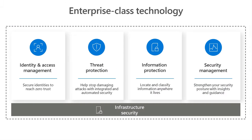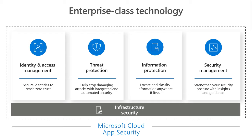Our CASB solution really spans across our four pillars: identity and access management, threat protection, information protection, and security management. These are the four pillars that define Microsoft's security story, and what's interesting is cloud app security spans across all four of those and even dabbles in the infrastructure security space as well. You can find out more about these solutions on my YouTube channel and blog at www.mattsozman.com.